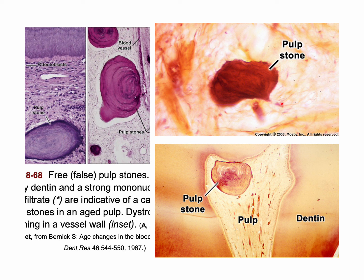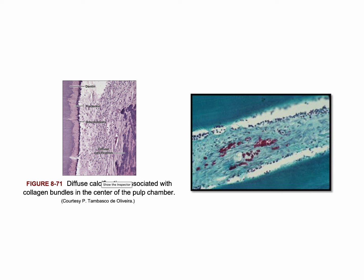This is a free stone, while here this is an attached stone. Sometimes these calcifications are like a snowstorm — they are just diffuse spicules here and there, as you can see here. This is a special staining used to visualize these calcified areas.